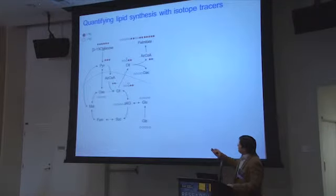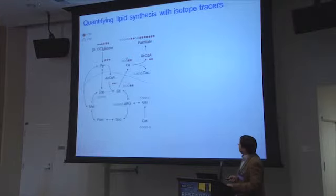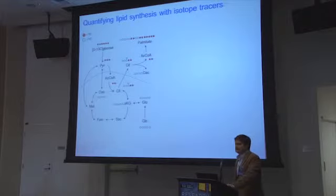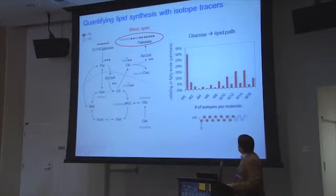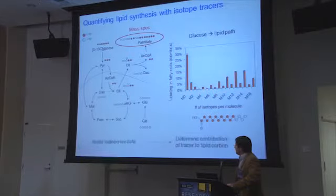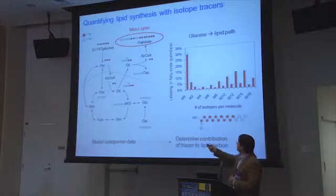In these experiments, we feed our cells or animals with stable isotope tracers — for example, glucose labeled on all six carbons with 13C, heavy isotopes. The cells metabolize this glucose, converting it in the TCA cycle to biomass such as fatty acids. We can then extract those fatty acids and measure labeling on a mass spectrometer. We can see that glucose carbohydrates are highly used to synthesize fatty acids, and we can see the number of isotopes on each fatty acid molecule and model this data to quantify the flux of one substrate or another to a given biomass pool.